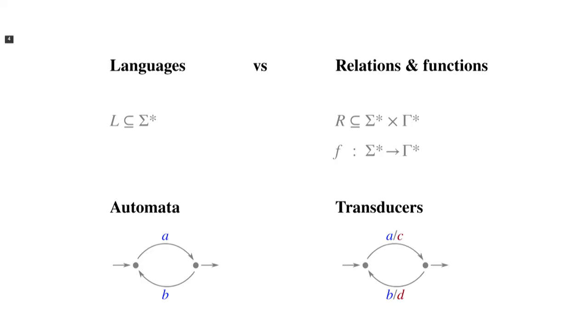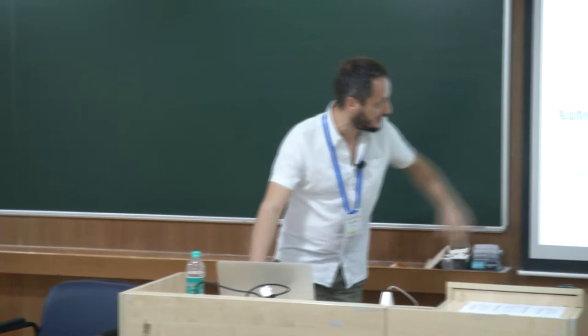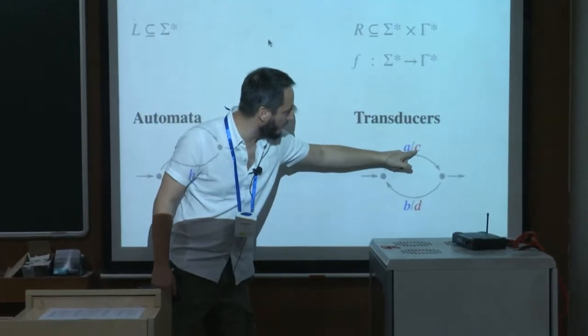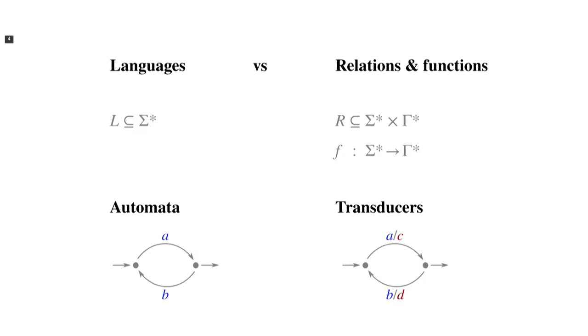Transducers are in some cases essentially the same as automata, except you add outputs to the transitions. When you consume a letter, you can append a letter, a string, or even the empty string to the output. In this example, the red part is the output — here it's a letter, but it could be a string.